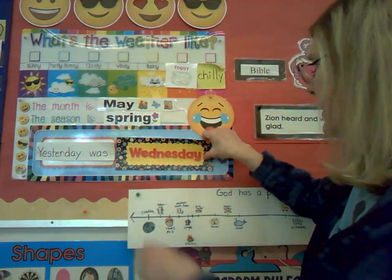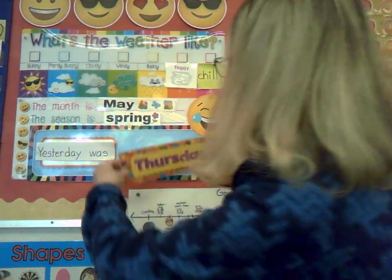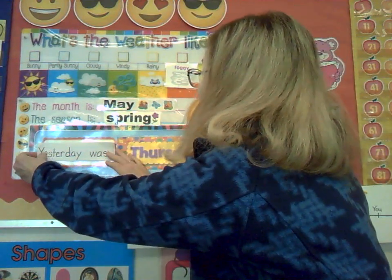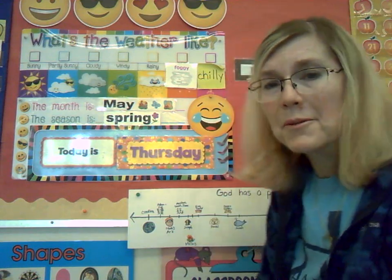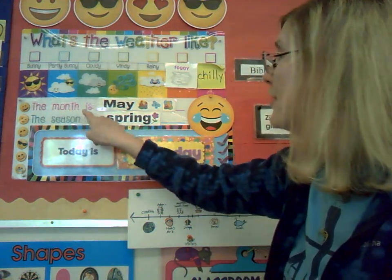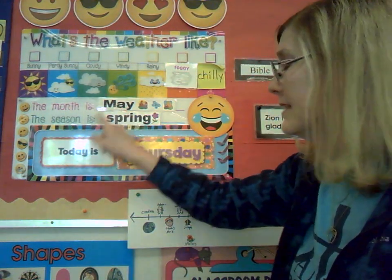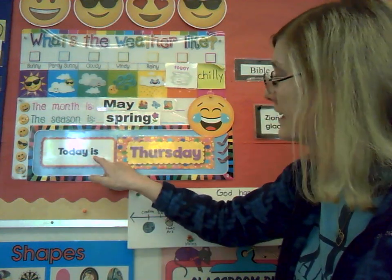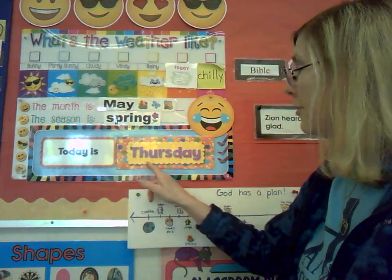Wednesday comes down, Thursday goes up. Let's take yesterday was down, and now let's read our information on the board. The month is May. The season is spring. Today is Thursday. Okay, let's head over to the calendar and get today's date taken care of.